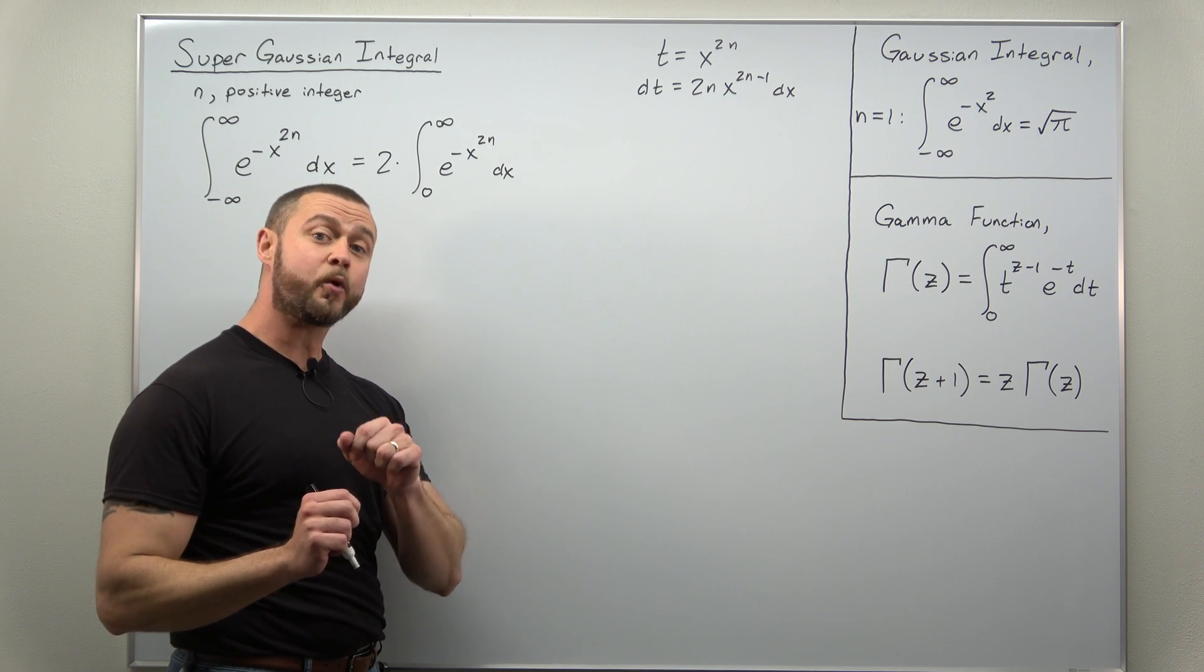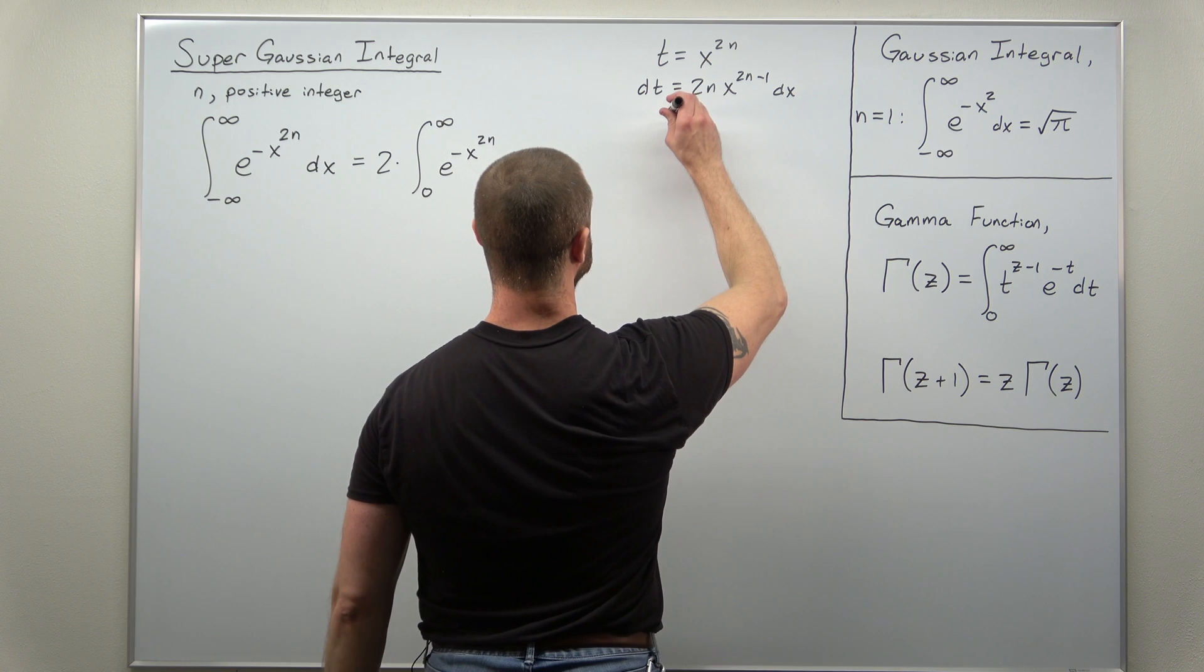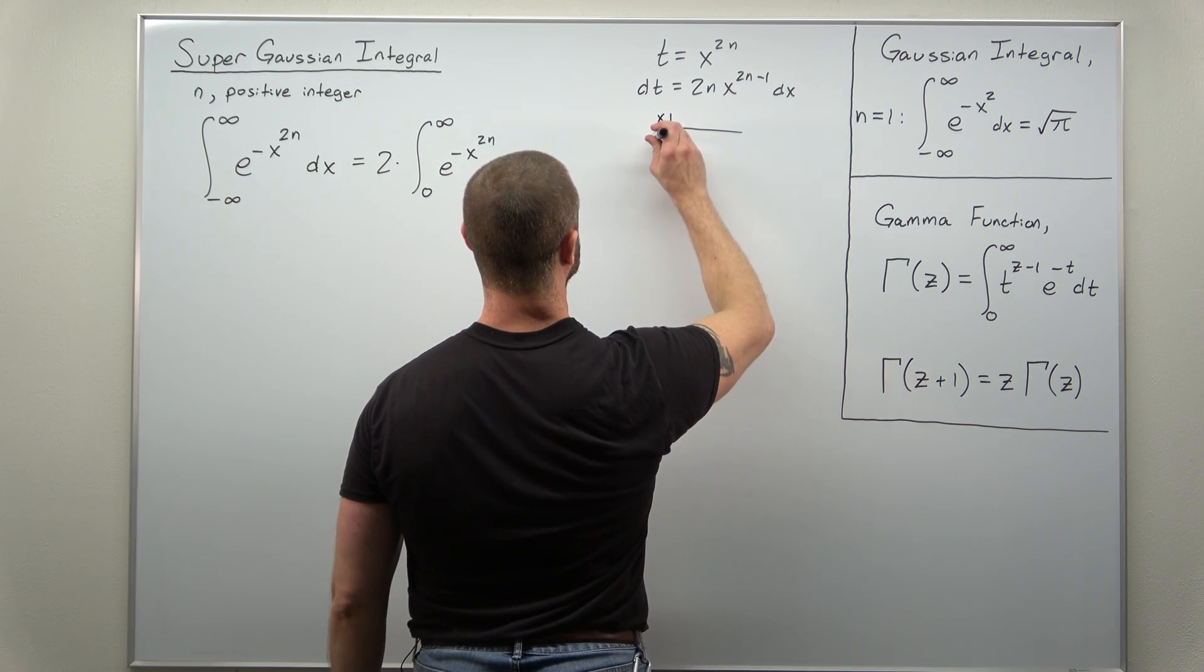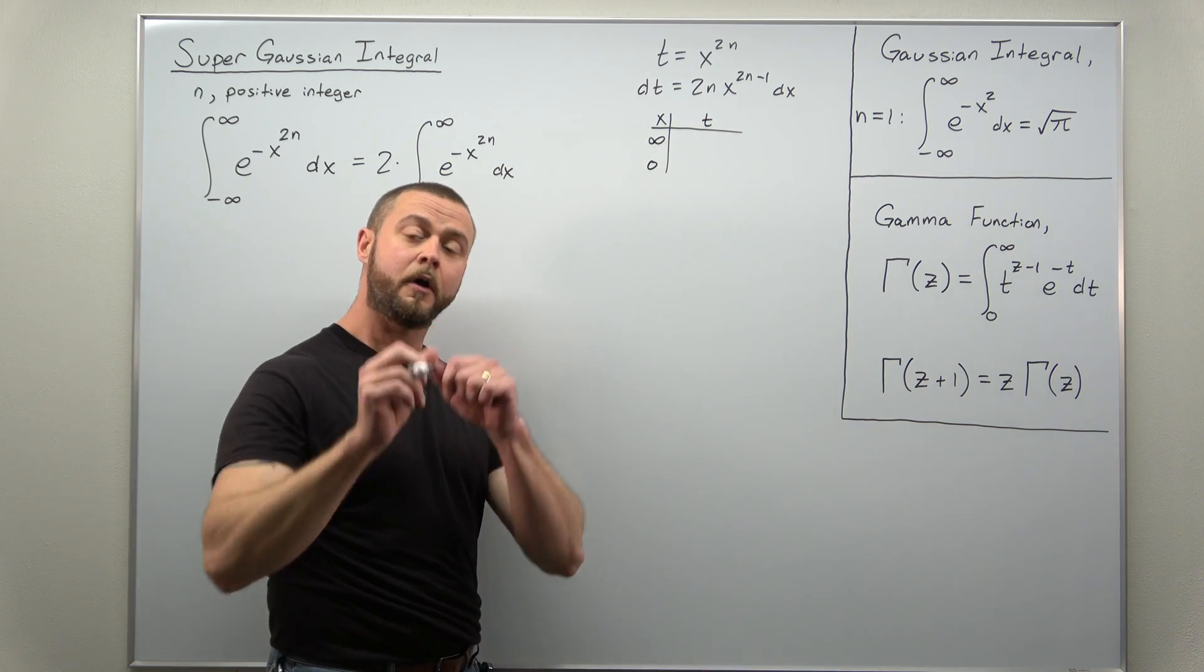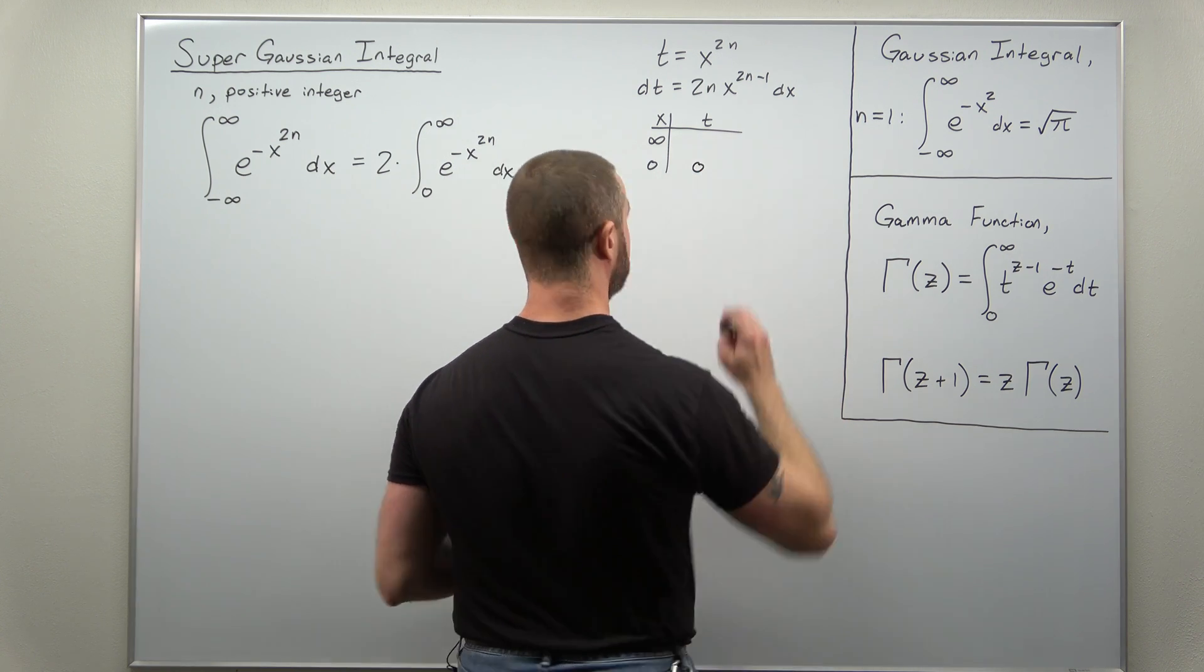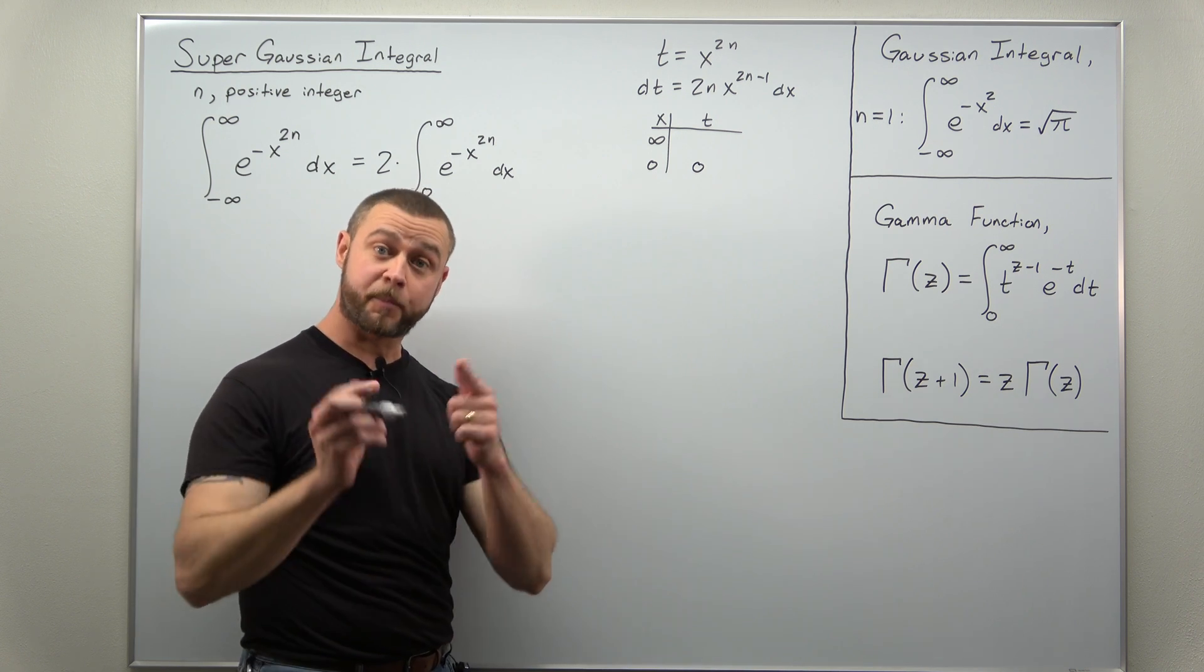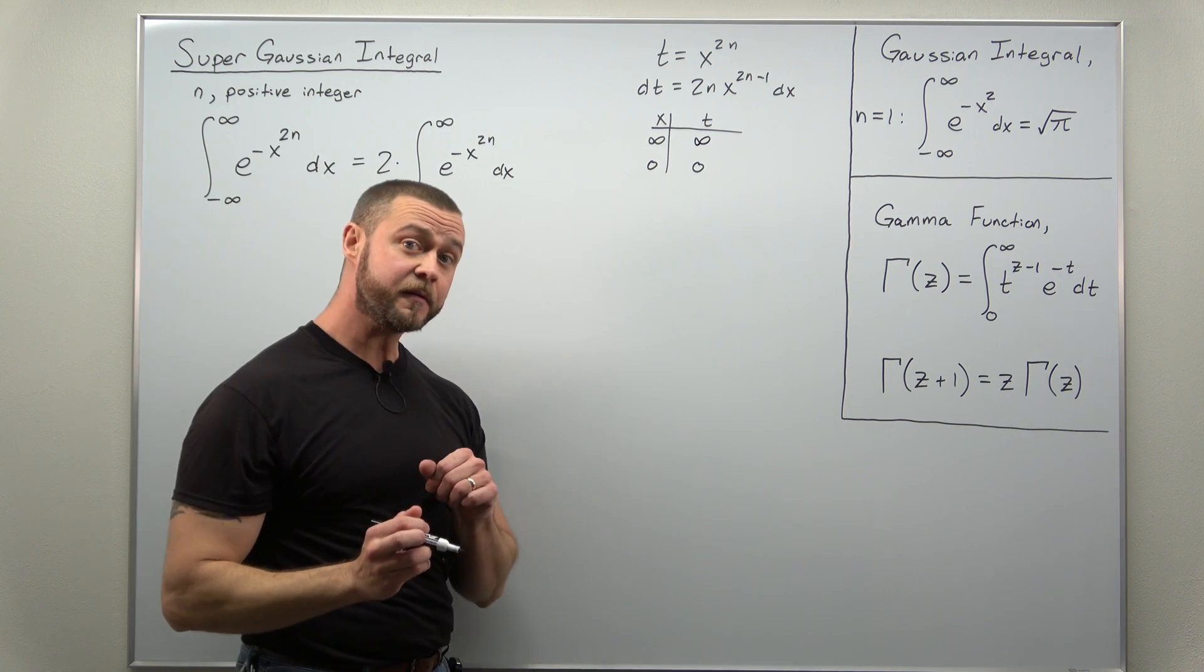And since we're implementing a substitution with a definite integral, let's go ahead and change or convert our x limits to new t limits using our substitution. Notice in your substitution, when x is zero, t is zero, and as x approaches infinity, t also approaches infinity. So our limits stay the same here.